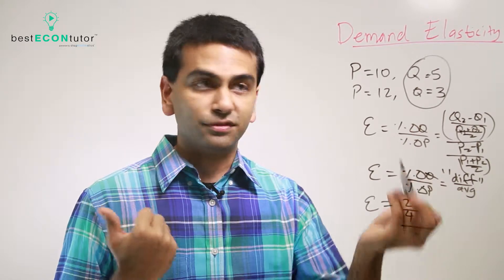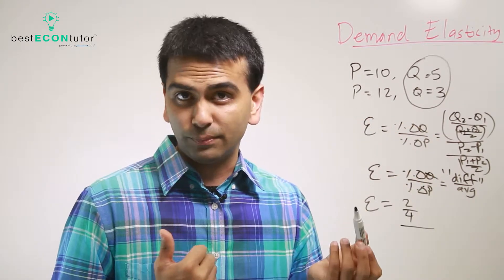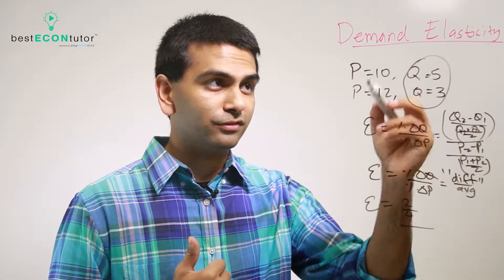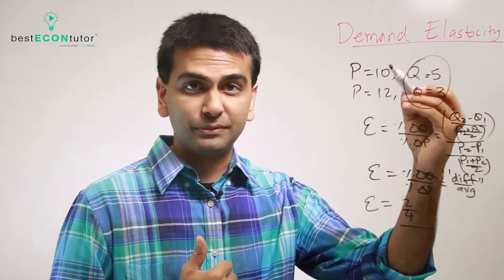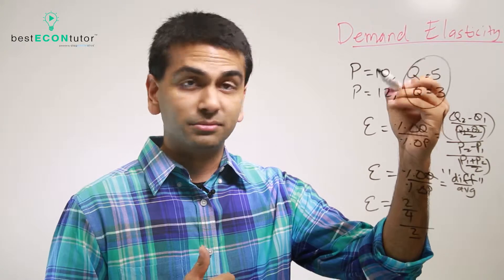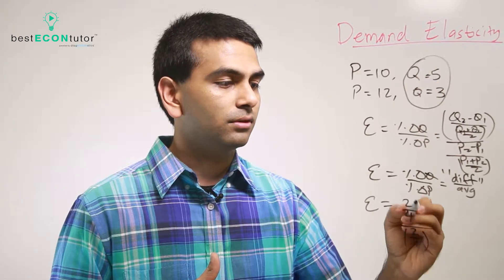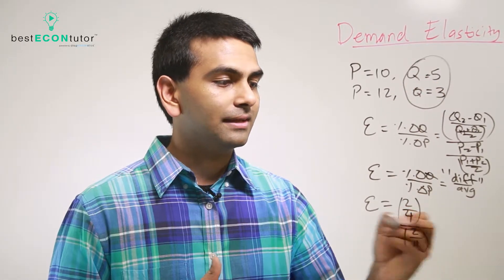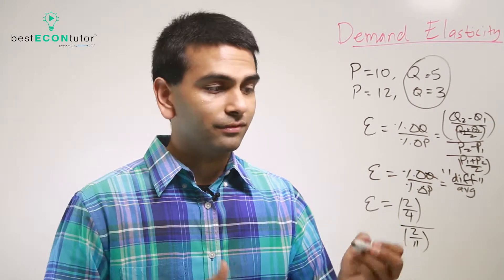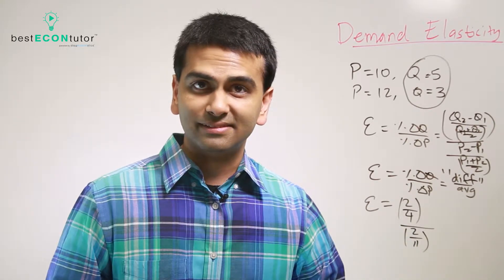Now do the same thing for price in the denominator: difference over average. The difference between 10 and 12 is 2, and the average, the number between 10 and 12, is 11. So the elasticity is just 2 over 4 divided by 2 over 11 — whatever that comes out to on your calculator is the elasticity.